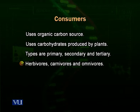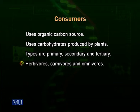Then comes the secondary consumers, which we also call carnivores — they eat upon the herbivore animals. Then comes tertiary consumers, which eat upon other carnivores. We also have another category called omnivores. Herbivores are organisms that feed upon plants; carnivores are animals that feed upon other animals; and omnivores eat upon both plant and animal material.